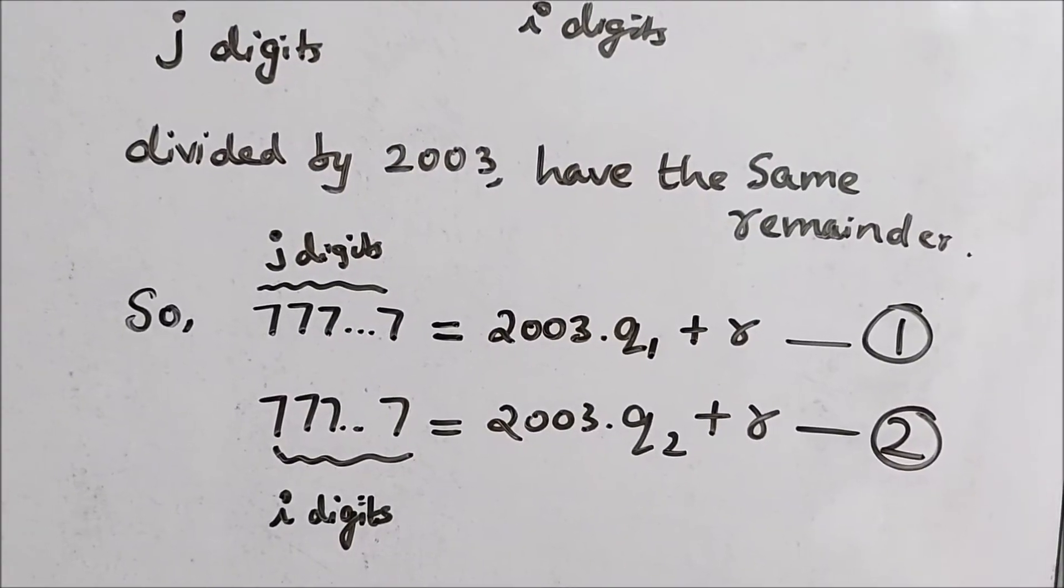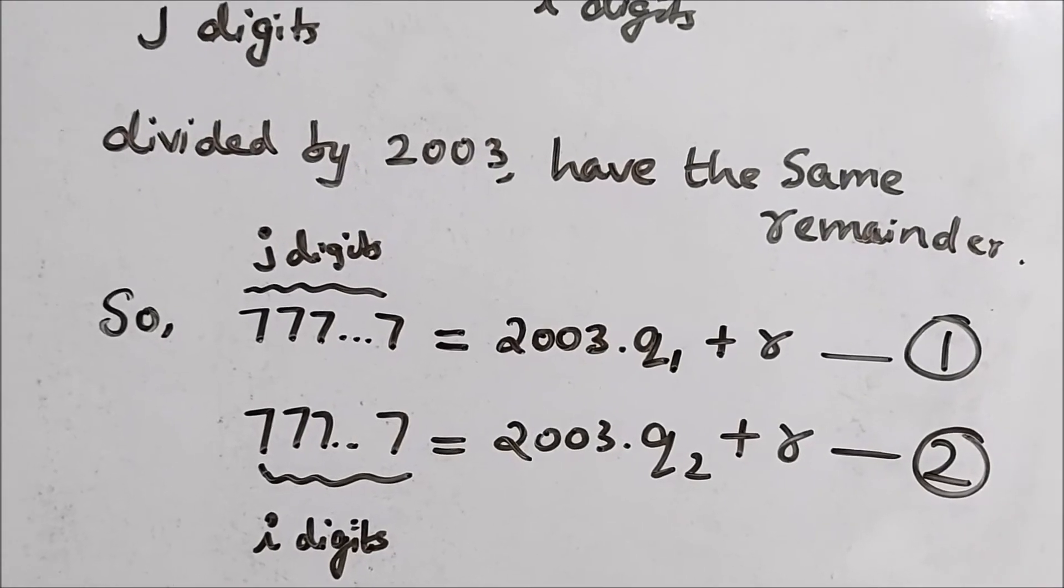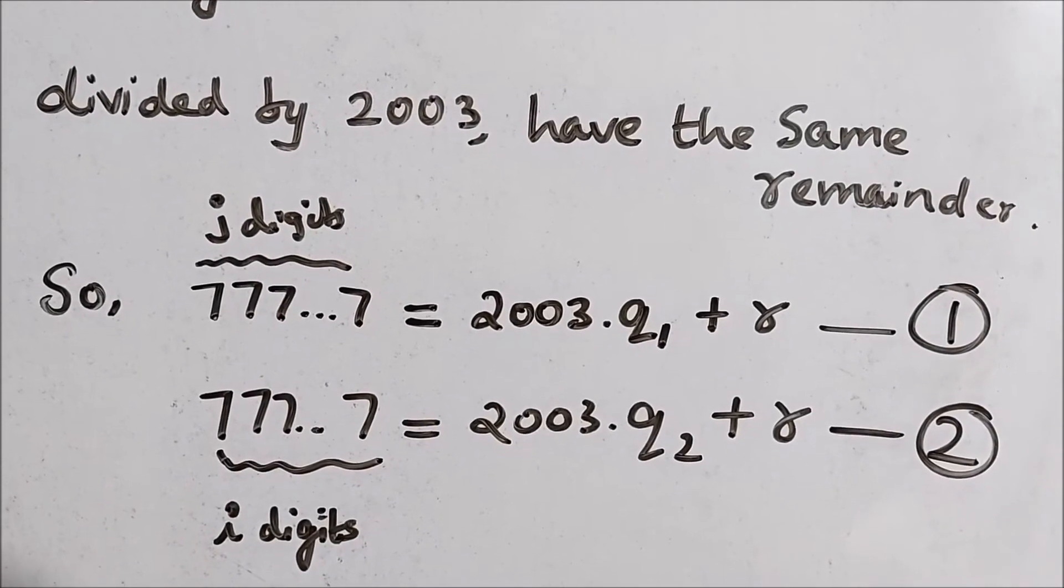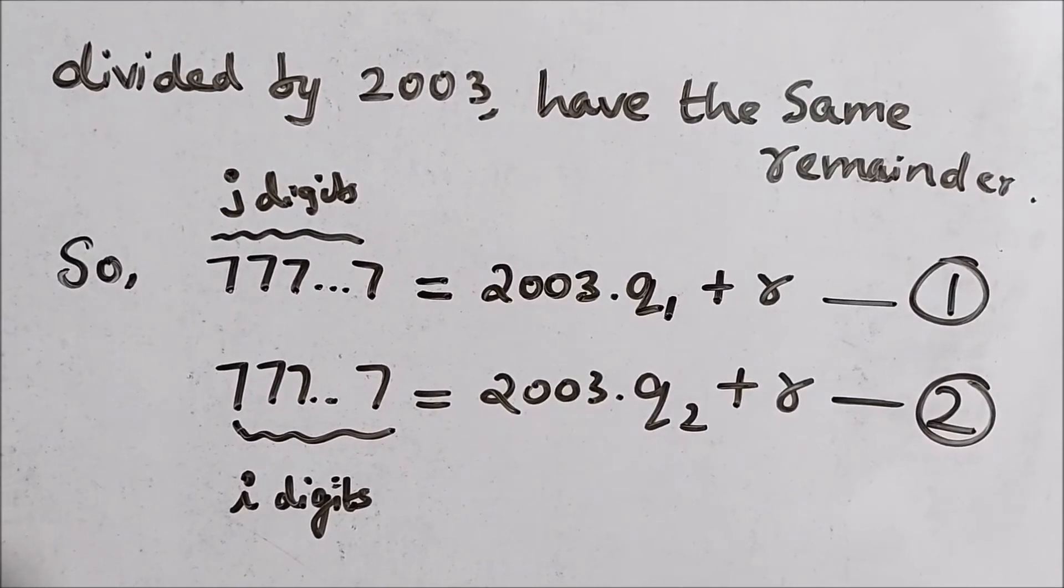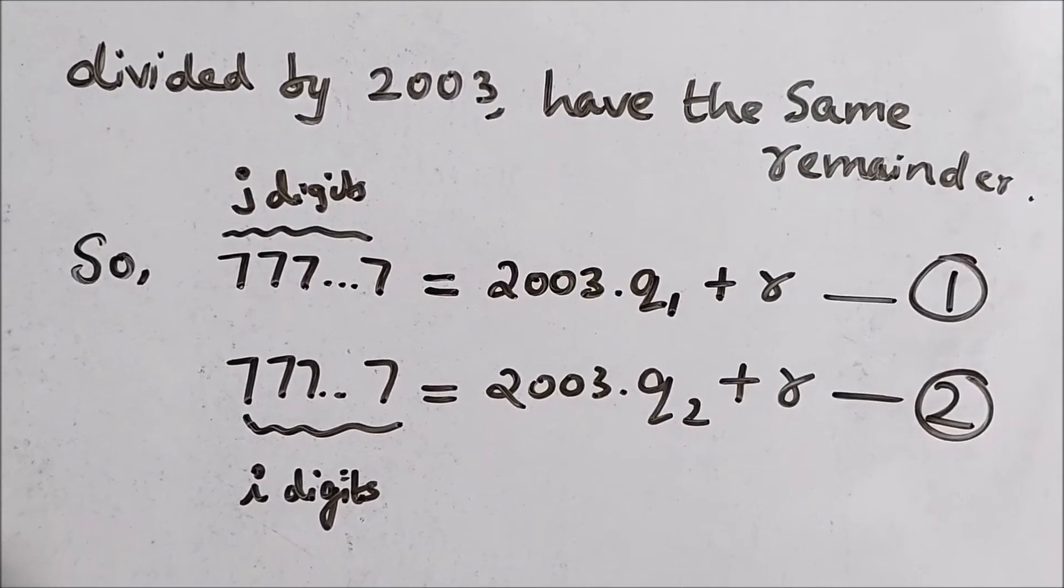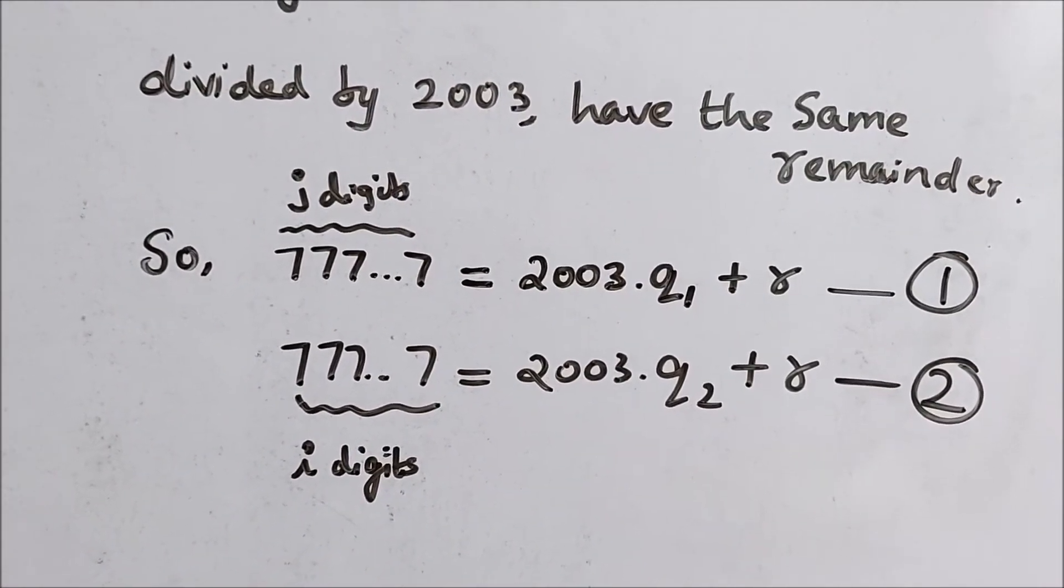When the j digits 7 is divided by 2003, the quotient that we have is q1 and the remainder is r. And similarly, when the i digit 7 is divided by 2003, the quotient is q2 and the remainder is same r.